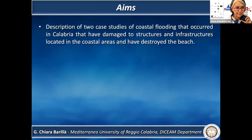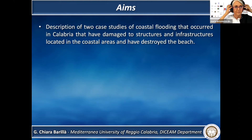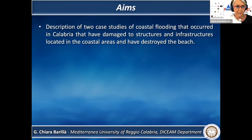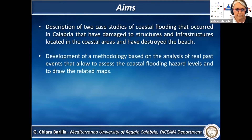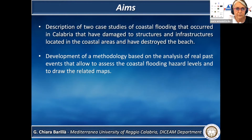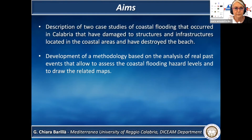The aims of the work concern the description of two case studies of coastal flooding occurred in Calabria that have damaged structures and infrastructures and destroyed the beach, and the development of a methodology based on the analysis of real past events that allow to assess the coastal flooding hazard levels and to draw their related maps.